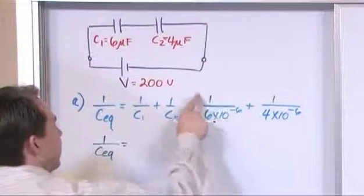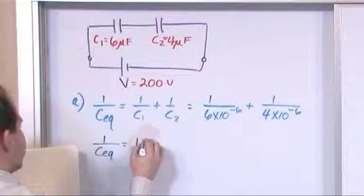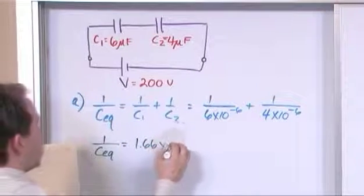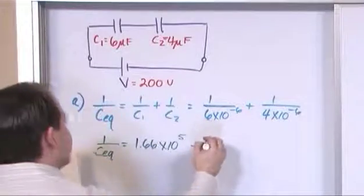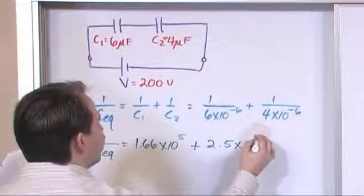When we evaluate this in our calculator, 1 over 6×10^-6, you're going to get 1.66×10^5, plus when we evaluate this in our calculator, it will be 2.5×10^5.